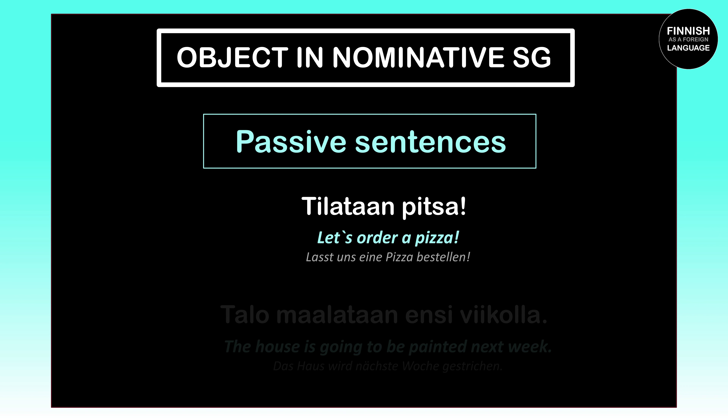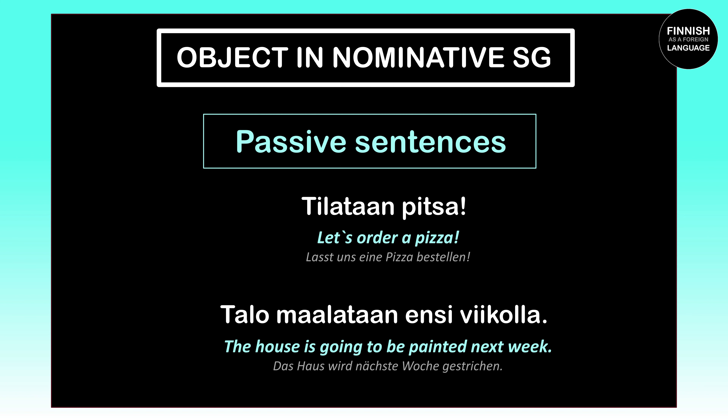Now let's move on to objects in passive sentences. Here's one example: 'Tilataan pizza' means 'Let's order pizza.' 'Tilataan' is the passive present of the verb 'tilata,' meaning 'to order,' so the object — the pizza — keeps standing in the nominative singular. Another example: 'Talo maalataan ensi viikolla' means 'The house is going to be painted next week.' 'Maalataan' is the passive present of 'maalata,' meaning 'to paint,' and since we have a passive sentence, 'talo' (the house) stays in the nominative singular.